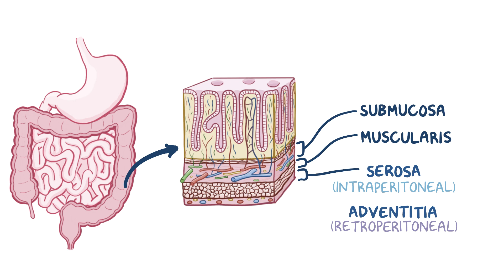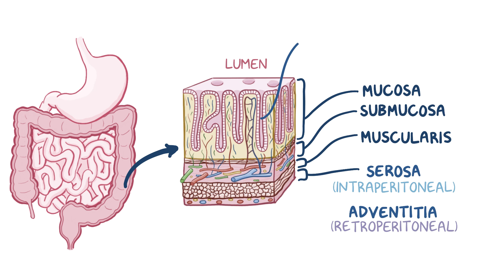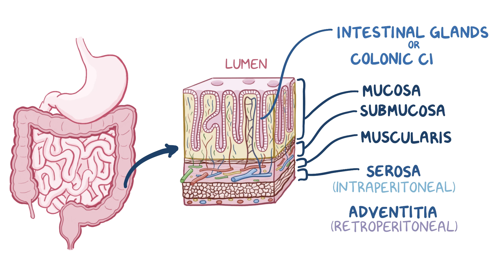And finally, there's the inner layer of the intestine, called the mucosa, which surrounds the lumen of the gastrointestinal tract and comes in direct contact with digested food. The mucosa has invaginations called intestinal glands, or colonic crypts, and is lined with large cells that are specialized in absorption.